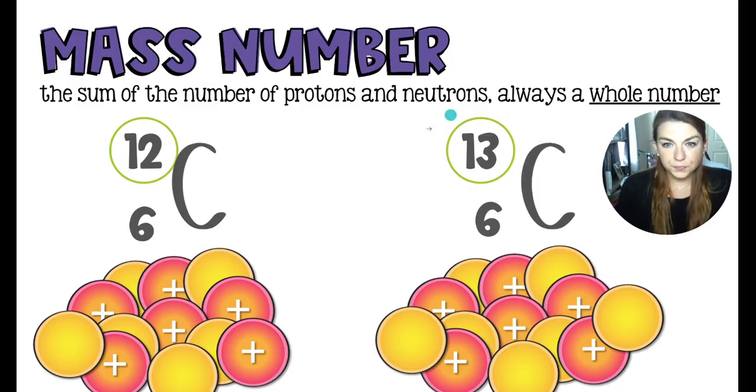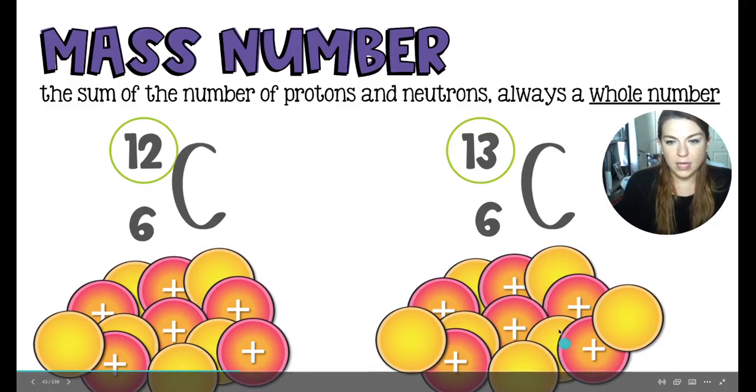Over here we have 13 nucleons, sometimes they're called, in the nucleus. The 13 minus the six indicates that I have seven neutrons in this carbon. If we were to count them, we have one, two, three, four, five, six, seven.